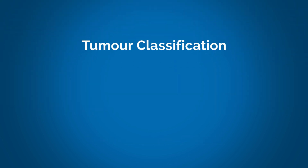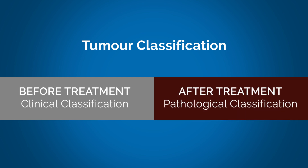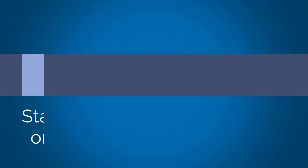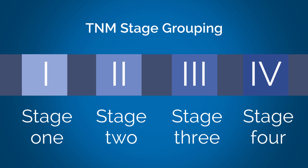Tumors are classified both before the start of treatment and after surgical treatment, known respectively as the clinical and pathological classification. Stage and stage group refers to the anatomical extent of disease. Prognostic group combines anatomical factors, namely stage, and non-anatomical factors such as age or tumor grade.